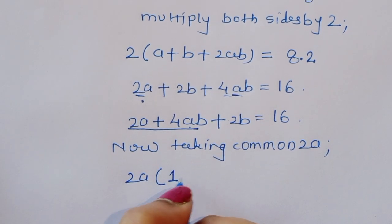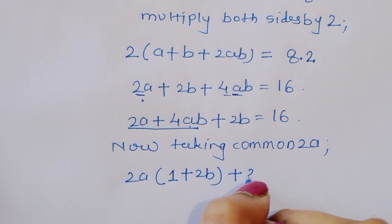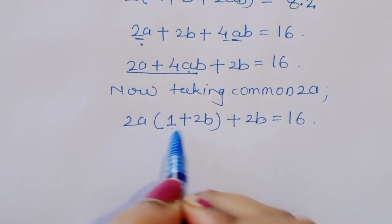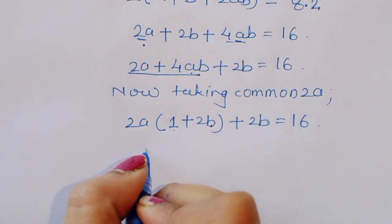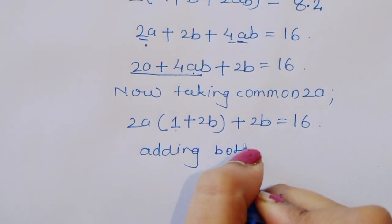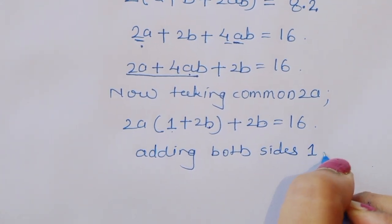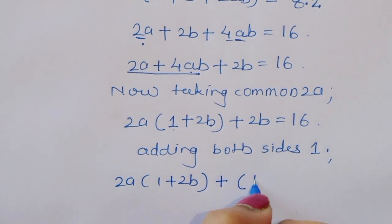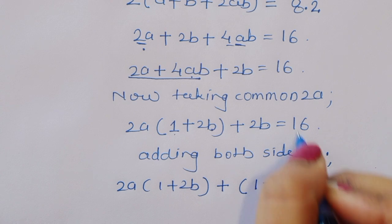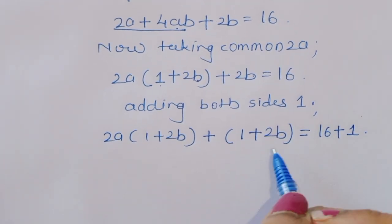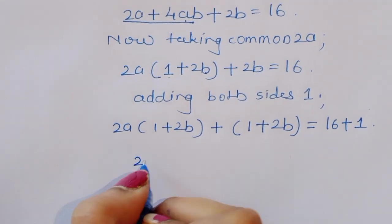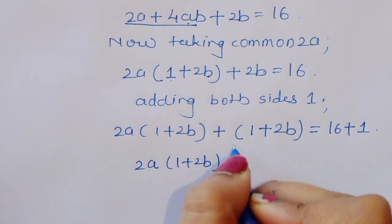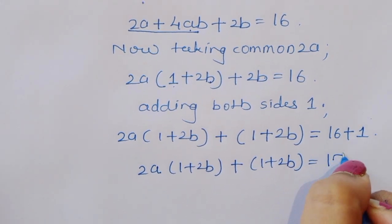Now we can add 1 to both sides. Adding 1 both sides, we will get 2a plus 1 plus 2b plus 1 plus 2b is equal to 16 plus 1, because we have to add 1 to both sides. So 2a times 1 plus 2b plus 1 plus 2b is equal to 17.